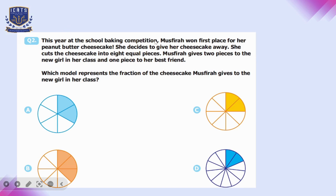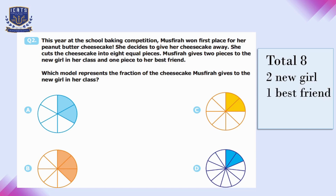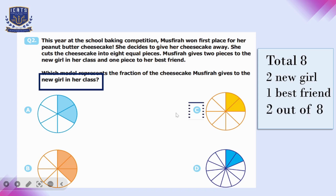Question number two: at a school baking competition, Musphira won first place for her peanut butter cheesecake. She cuts it into eight equal pieces, gives two pieces to the new girl and one piece to her best friend. The question asks what fraction she gave to the new girl. Option A has six parts and option D has ten parts, so we omit those. The answer is two out of eight, so option C is correct.